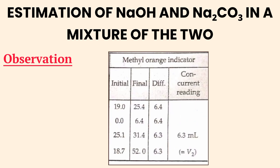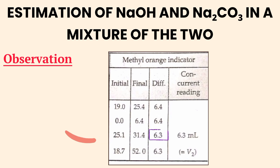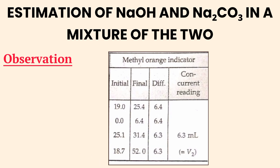Methyl orange indicator, columns 7 to 10. Now let's look at the readings after adding methyl orange and continuing the titration. Observation 1: 19.0 to 25.4 = 6.4 mL. Observation 2: 0.0 to 6.4 = 6.4 mL. Observation 3: 25.1 to 31.4 = 6.3 mL. Observation 4: 18.7 to 25.0 = 6.3 mL. The average volume of acid required after the phenolphthalein endpoint using methyl orange is 6.3 mL.